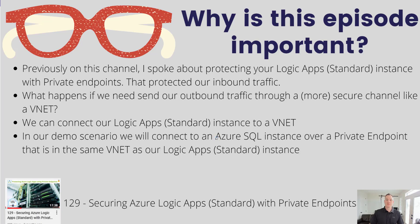Let's talk a little bit about why this episode is important. Previously on this channel I've spoken about protecting your Logic App Standard Instance using private endpoints, which protected our inbound traffic. Now what happens if we need to send our outbound traffic through a more secure channel like a VNet? Perhaps we have other services already residing within that VNet and we don't want to route traffic through a public internet connection but rather through a private connection. We're going to connect our Logic App Standard Instance to a VNet and in our demo scenario we're going to connect to an Azure SQL instance over a private endpoint that has been deployed into that same VNet.